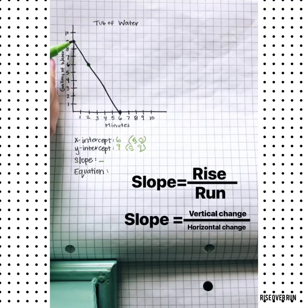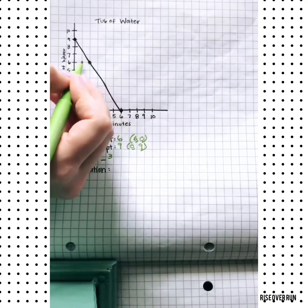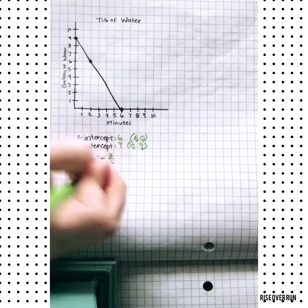And we can count, 1, 2, 3 is the rise or vertical change, and the run is 1, 2, so that's a negative 3 over 2.